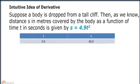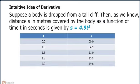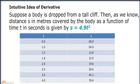Introduction: Intuitive idea of derivatives. Suppose a body is dropped from a tall cliff. As we know, the distance s in meters covered by the body as a function of time t in seconds is given by s equals 4.9 t squared. The values taken by s at different time intervals from the start are shown in the following table.